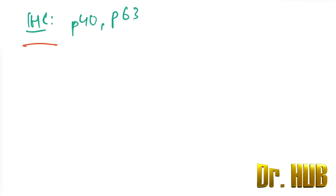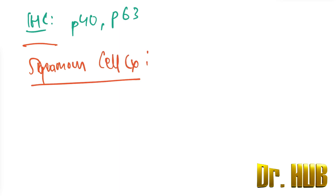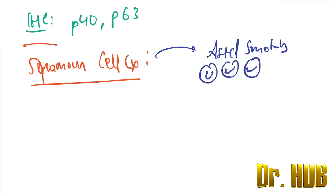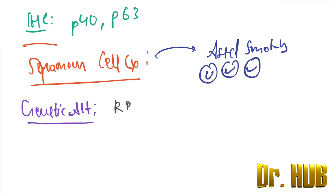Lastly we move on to small cell carcinoma. The association with smoking is strong. Looking at the common genetic alterations: RB, TP53, as well as MYC — all these are the genetic alterations.